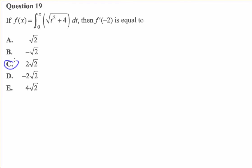But if we recognize that t is a dummy variable, we actually get f dash of x equals root x squared plus 4. And then we want f dash of negative 2, which equals the square root of 8, which simplifies to 2 root 2.